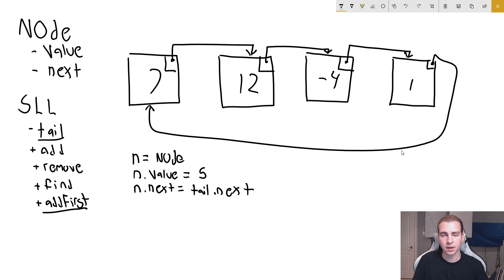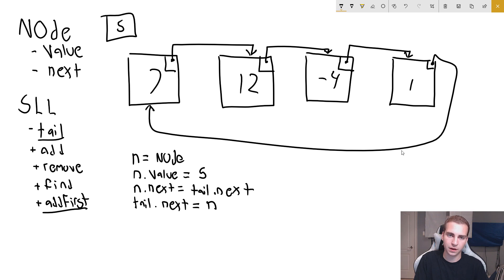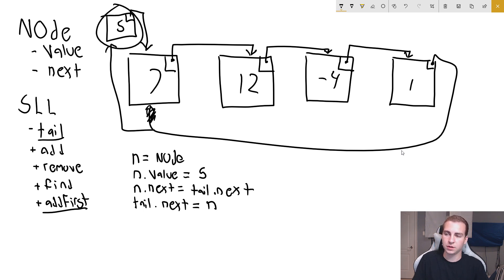Now that we've set n.next to tail.next, we change the last node's pointer to point to our new node. So we say tail.next equals n. We've successfully slotted in a new node with value five, pointed it to seven, and changed the tail's pointer to go to this new node. This new node will now be our head node. Since we keep track of the tail and tail.next is this new head, everything works as planned. That is how we write the pseudocode to add something to the beginning of the list.